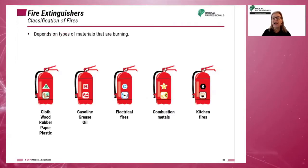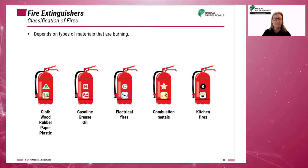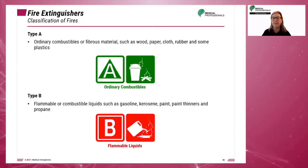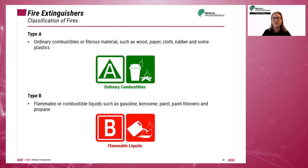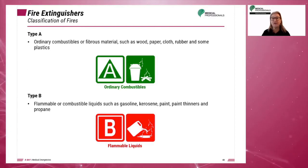There are five classifications of fires based on the type of material burning. A Type A fire involves ordinary combustibles or fibrous material such as wood, paper, cloth, rubber, some plastics, and basic furniture.